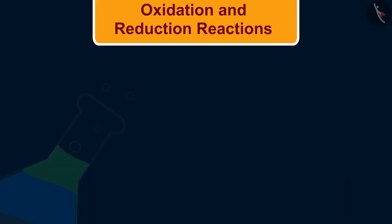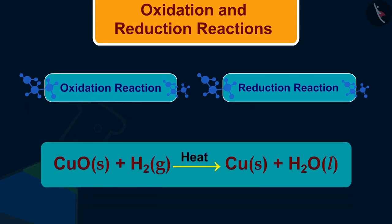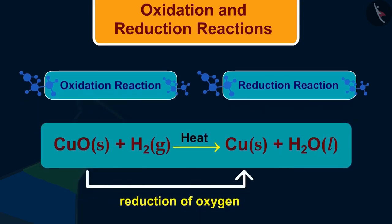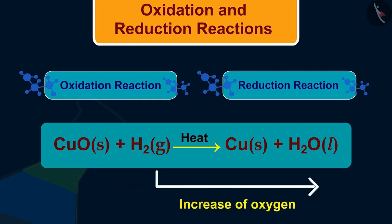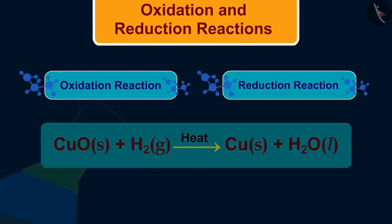Let us learn about the reaction in which both oxidation and reduction are observed. As we saw in example 2, the reduction of oxygen from copper oxide, that is, reduction and increase of oxygen in hydrogen, that is, oxidation is happening. In this way, oxidation and reduction are taking place in the same reaction.